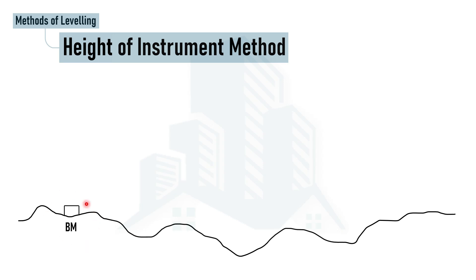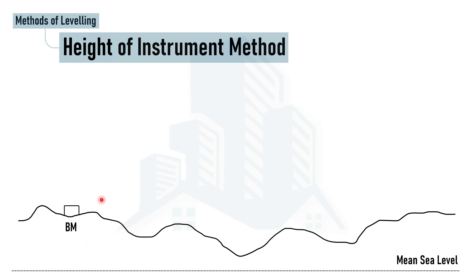The benchmark tells us the reduced level of a certain point from mean sea level. This is the place where the height from mean sea level up to this point is known, which we call the reduced level of the benchmark.